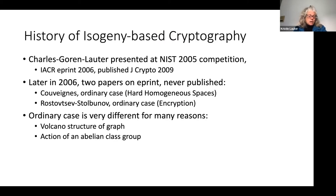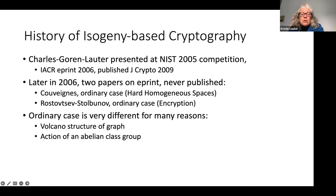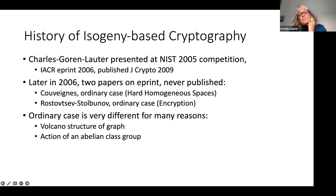After our preprint appeared in 2006, two other preprints appeared on ePrint — neither of them was actually ever published. One by Couveignes called 'Hard Homogeneous Spaces' and one by Rostovtsev-Stolbunov, which is the ordinary case for encryption. The ordinary case is very different from the supersingular case for many reasons, but there are connections that have been investigated since. I believe Stephen Galbraith in his talk later today will talk more about the ordinary case.